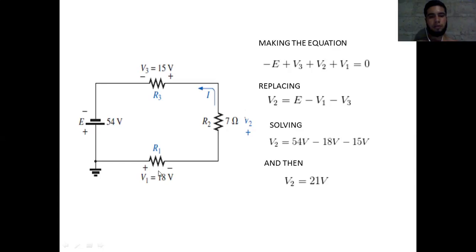The resistor R1 has 18 volts, R3 has 15 volts, and now we are going to make the equation. I'm going to put it in an equation and we start.